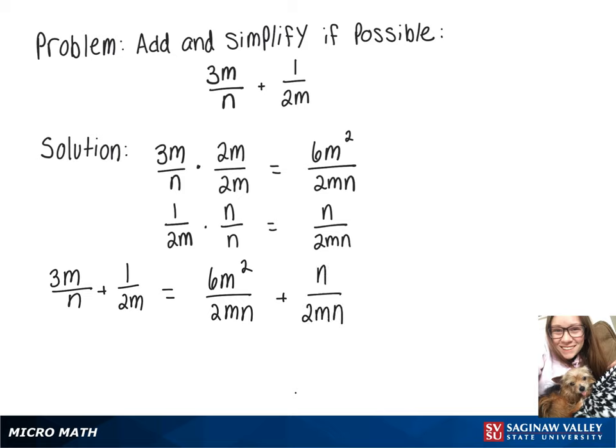And now since we have a common denominator, we can put those two fractions together into one, leaving us with 6m squared plus n over 2mn.